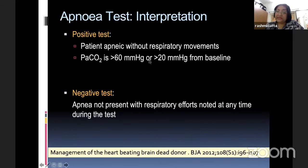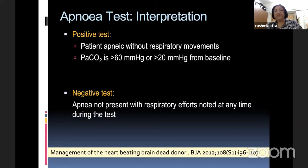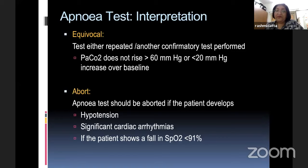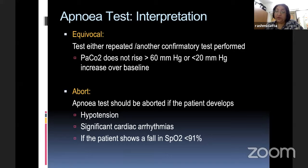Once brain death is confirmed, organ management begins and we are running against time. The goals are clear: early donor recognition, accurate declaration of brain stem death — which must be documented very properly to avoid any accusations of harvesting organs — early ICU admission and management by a dedicated team. The hierarchy of next-of-kin must be established because in the northern part of the country, situations arise where a senior family member may refuse even if the wife, who is the NOK, says yes.